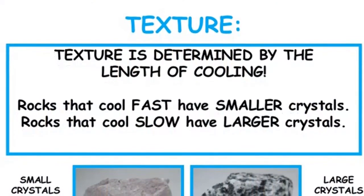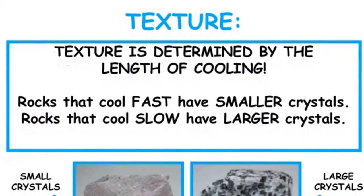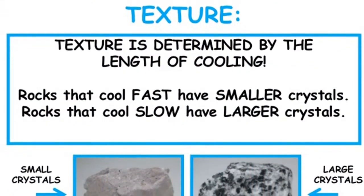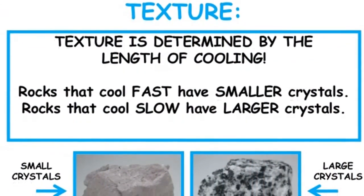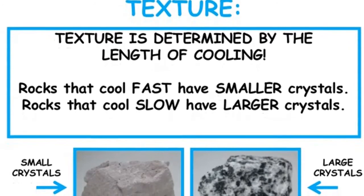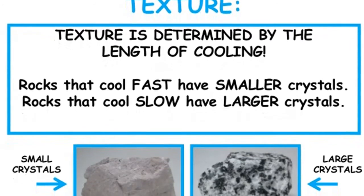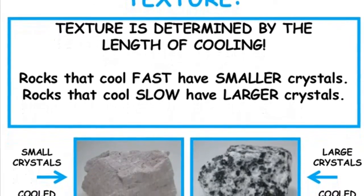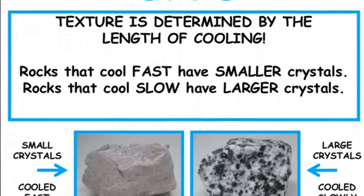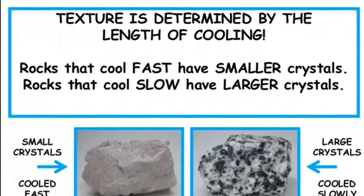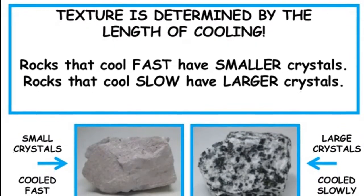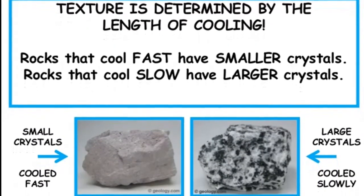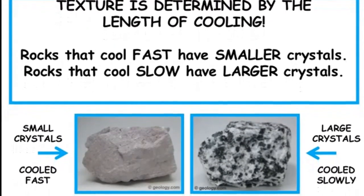Three factors affect igneous textures: cooling rate, silica in the magma, and gases in the magma.